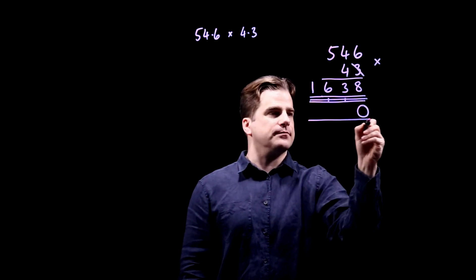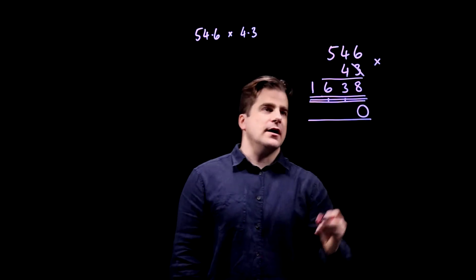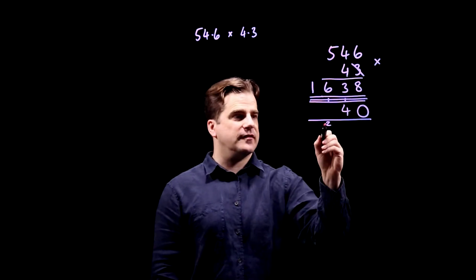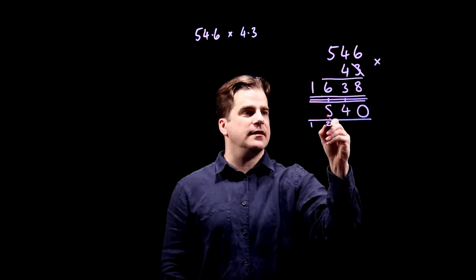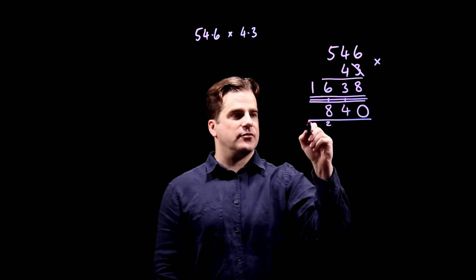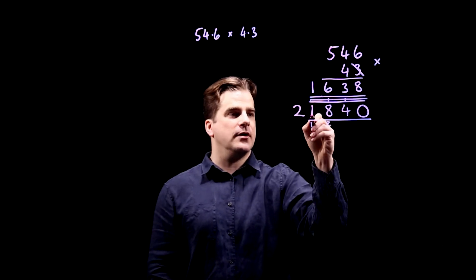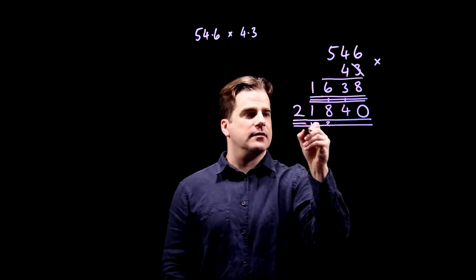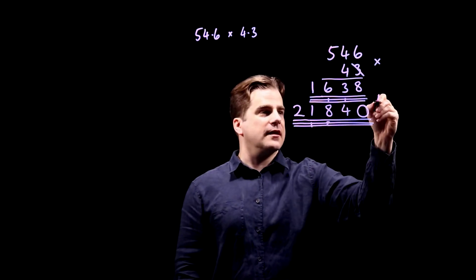Right, four times six is 24, four times four is 16 plus two is 18, four times five is 20 plus one is 21. Get rid of these little numbers and now we're ready to add these together.